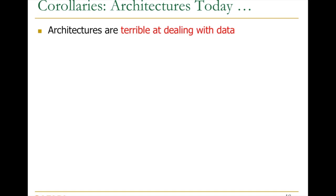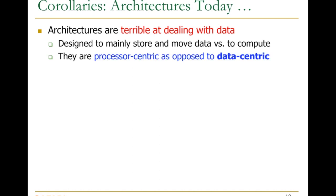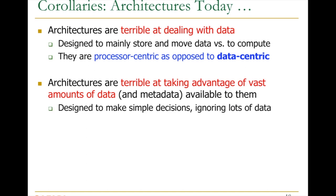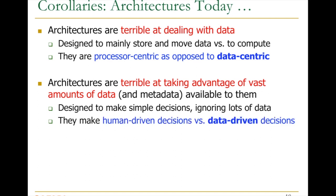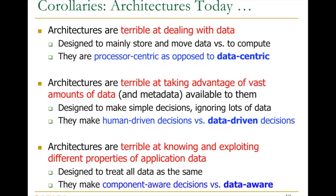Given what I said, the corollaries are: today's architectures are terrible at dealing with data because they're designed to mainly store and move data rather than compute — designed with a processor-centric paradigm as opposed to a data-centric paradigm. Second, today's architectures are not good at taking advantage of vast amounts of data and metadata they see over seconds, milliseconds, years, or decades. They're designed to make simple decisions, ignoring lots of data — decisions are made in a human-driven manner rather than a data-driven manner. A human designs the policies once, rather than policies changing over time based on incoming data. Third, architectures are terrible at knowing and exploiting different properties of application data — they treat all data as the same, making component-aware decisions rather than data-aware decisions.